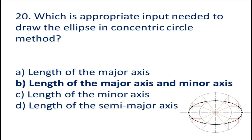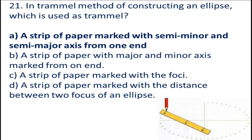Question number 20: Which is the appropriate input needed to draw the ellipse in the concentric circle method? A. Length of the major axis. A. Length of the minor axis.